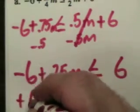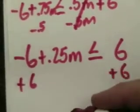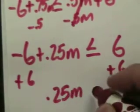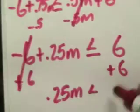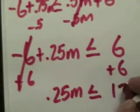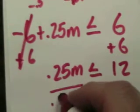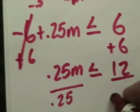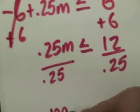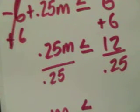Add 6 to both sides, and I'll get 0.25m is less than or equal to 12. Divide both sides by 0.25, the number on my variable. And I'm going to get m is less than or equal to 0.25.